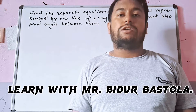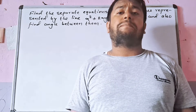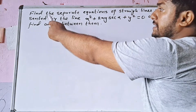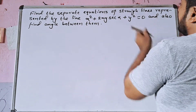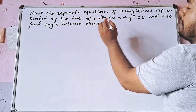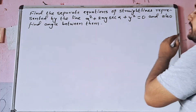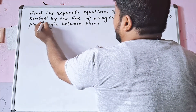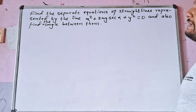Hello everyone, welcome to my YouTube channel. Today I will tell you about a pair of straight lines. I will tell you a question: Find the separate equations of straight lines represented by x squared plus 2xy·secα plus y squared equal to 0, and also find the angle between them.